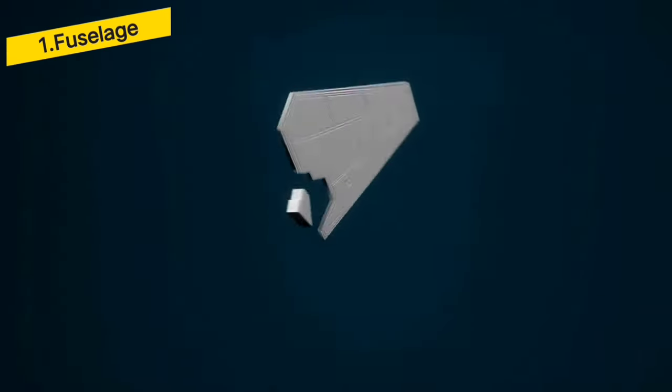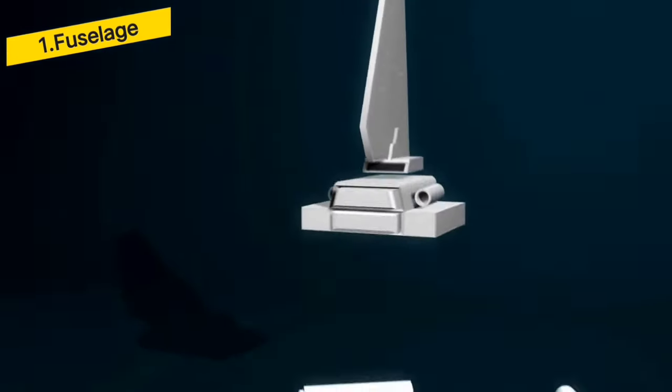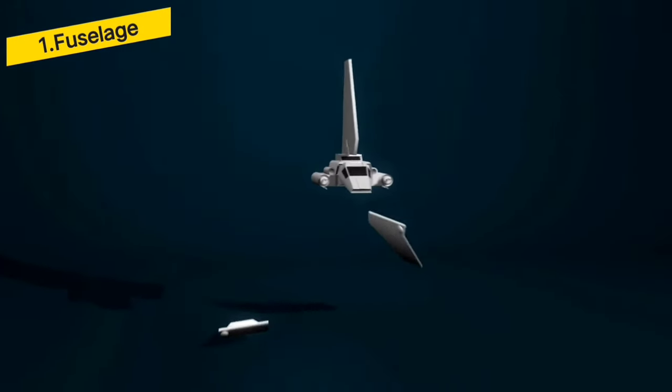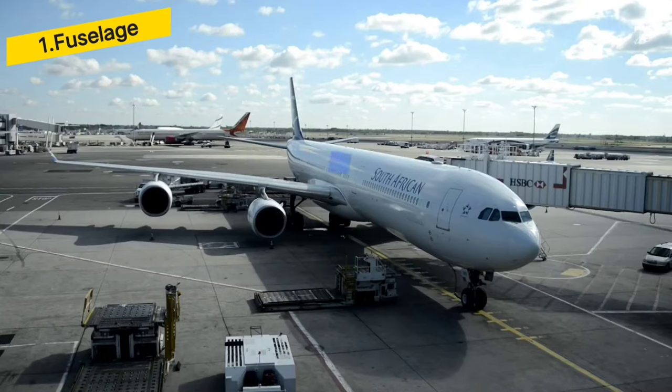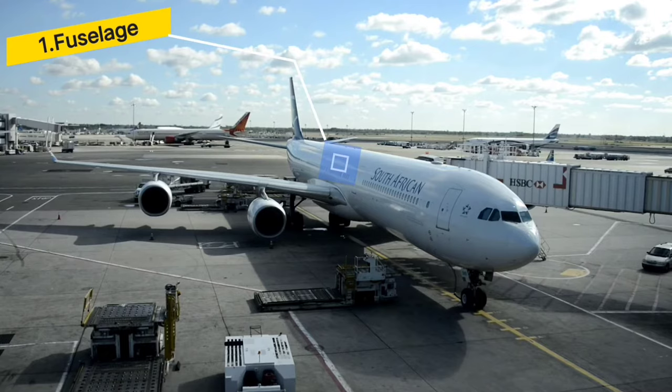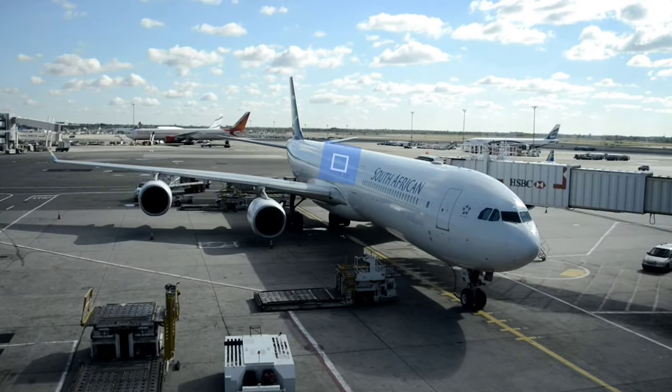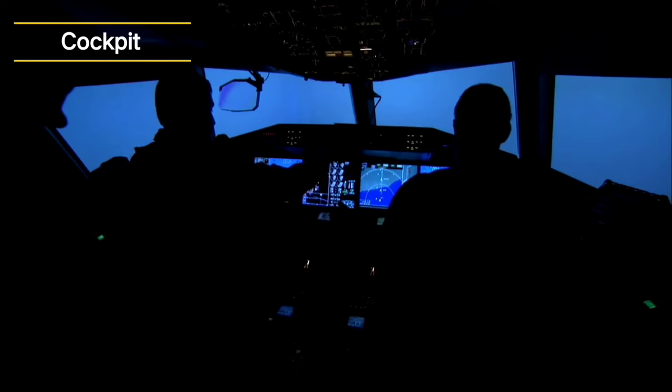It is the main structure of an aircraft to which all other components are attached. It has space inside it to accommodate passengers, cargo equipment, controls and other accessories. It contains cockpit where pilots stay and control the aircraft.